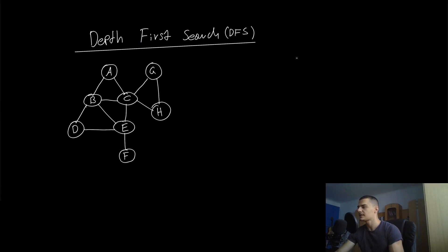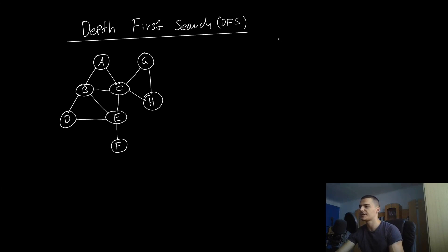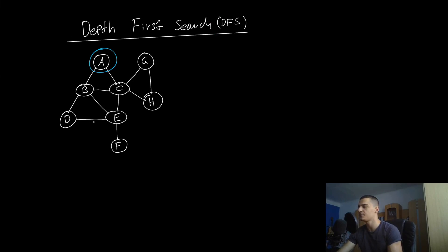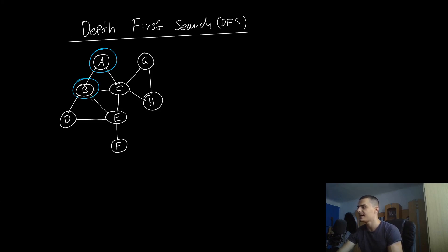Now let's talk about the alternative approach: Depth First Search, or DFS. DFS is essentially the opposite — we start at a point and instead of looking at neighbors first, we go as deep as possible. We still need to pick a neighbor of A to begin since we can't jump to unconnected nodes. But instead of processing both B and C, we pick one — say B — and go as deep as possible before returning to C.